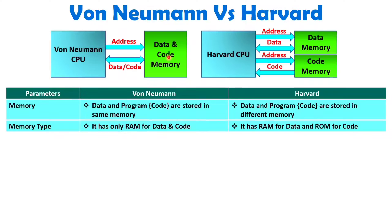When we talk about memory type, with Von Neumann, data and code memory are the same. Code is only read, but data access is bi-directional — we read as well as write data. So the common memory must be RAM. With Harvard architecture, data access is bi-directional, so data memory needs to be RAM. For code memory, you just need to read the program, so you use ROM — read-only memory.